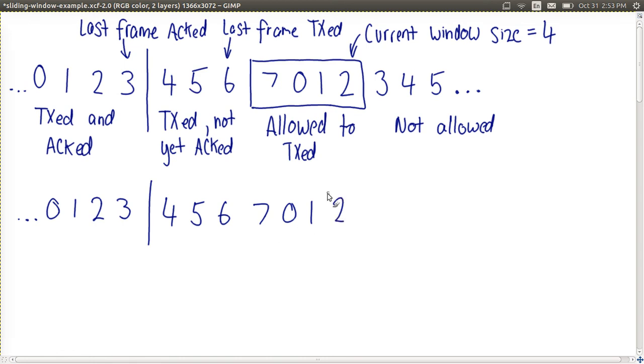And that leaves us 1 remaining allowed to be transmitted. Frame 2 is allowed to be transmitted, meaning the current window size is 1. 3, 4 and 5 and beyond are still not allowed. That was just after the transmission of 3 frames, 7, 0 and 1.